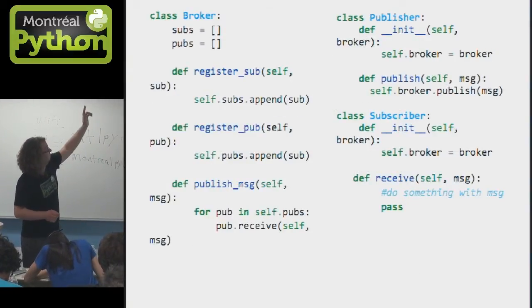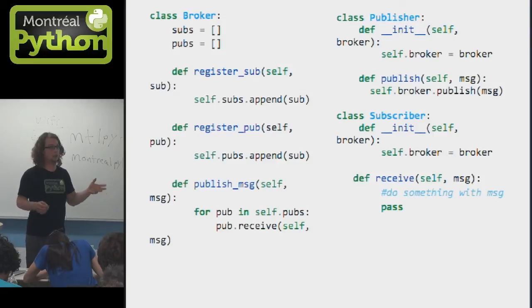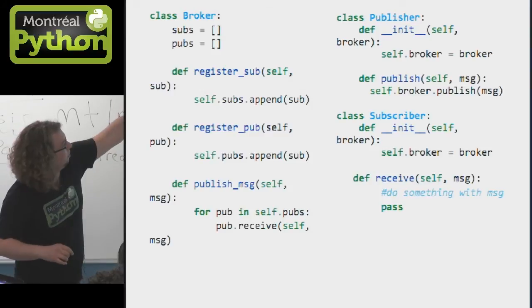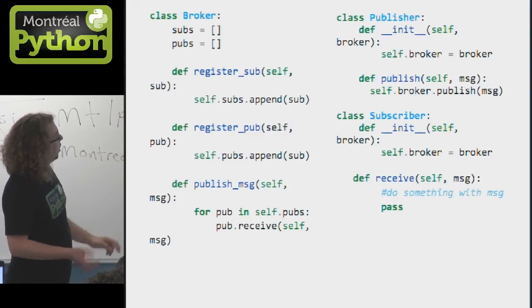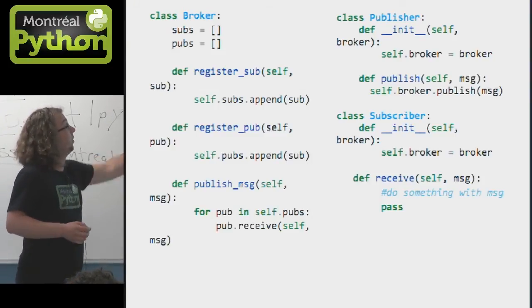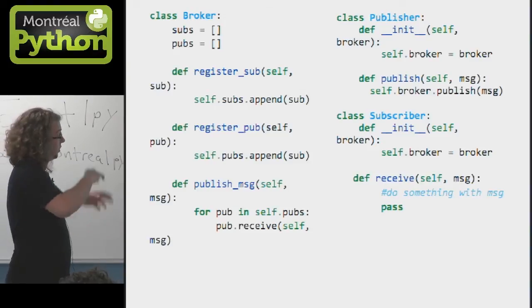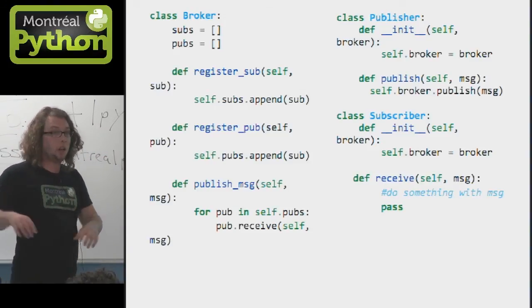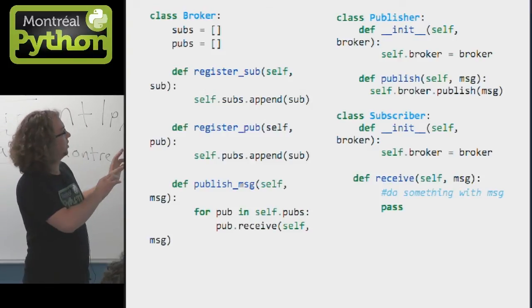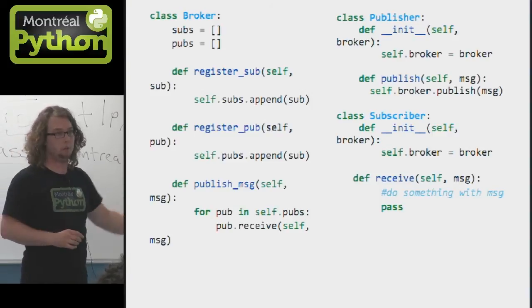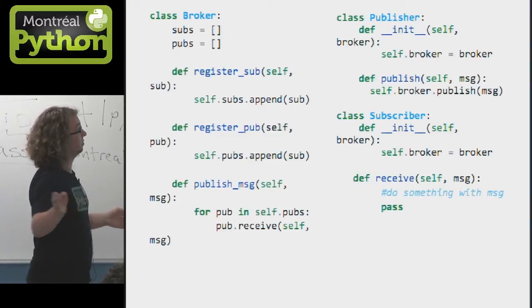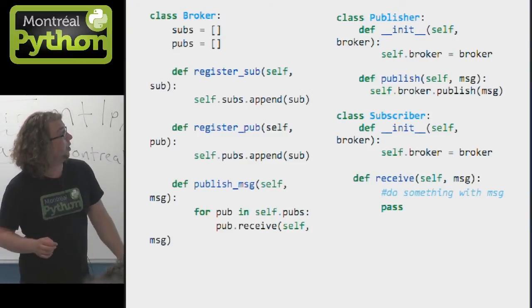We have a naive implementation here, where your broker, you're going to have your list of subscribers and publishers. Each are going to be subscribed by either the publisher or the subscriber. And when the publisher wants to publish a message, all it does is it iterates over those who are subscribed and they're going to push the message. Of course, this is naive. So usually you're going to want to have maybe some identification to your subscriber and your publisher so that your broker can filtrate the message so it doesn't have to give it to all the subscribers.